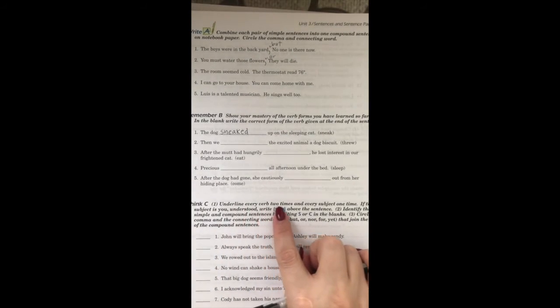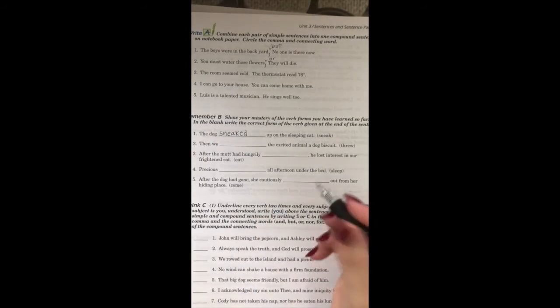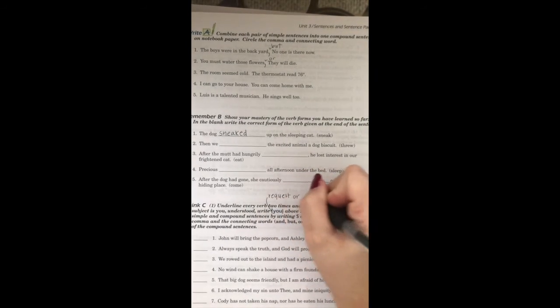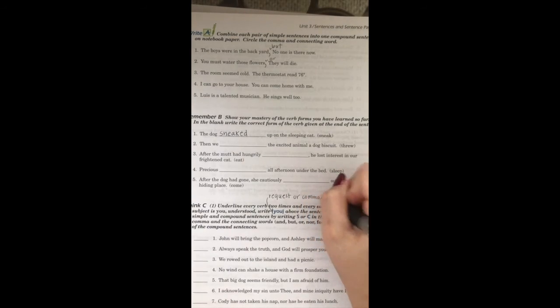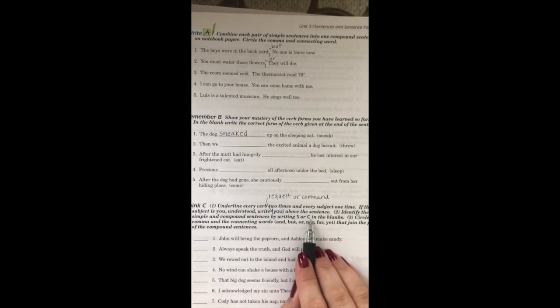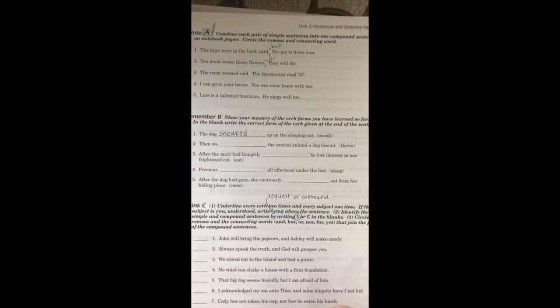Then for Think, See, you're just going to underline every verb two times, every subject one time. We're used to doing that. If the subject is you, write you in parentheses. So if there's a request or a command, like an imperative sentence, then the subject is going to be you in parentheses. Identify the simple and compound sentences by writing S or C in the blanks. If the sentence is simple, you'll write S. If there are two sentences in one connected by one of those words, you'll write C for compound. Circle the comma and the connecting words that join the parts of the compound sentences.